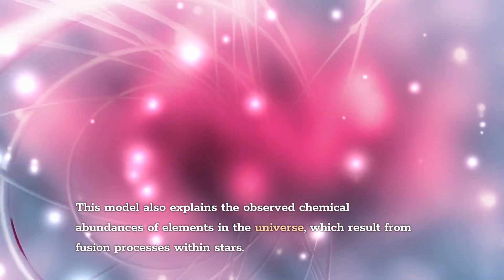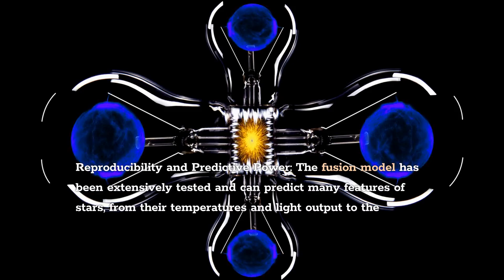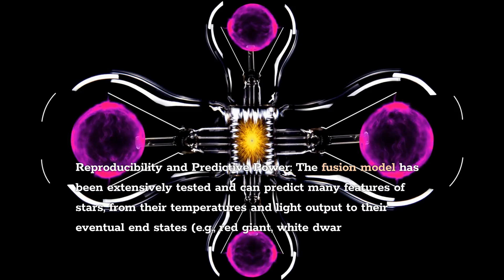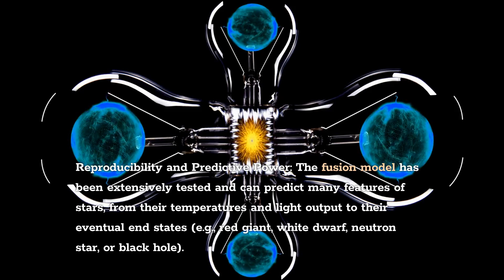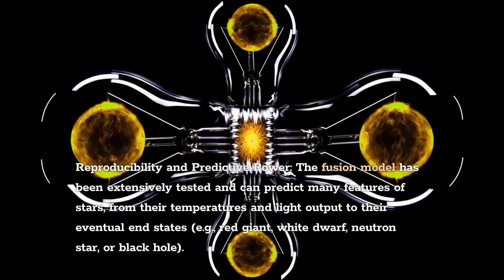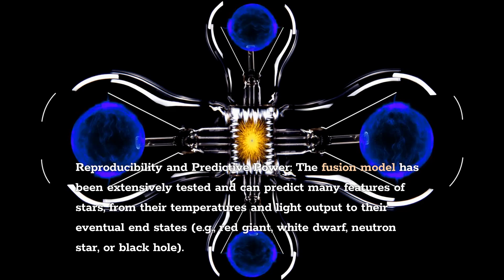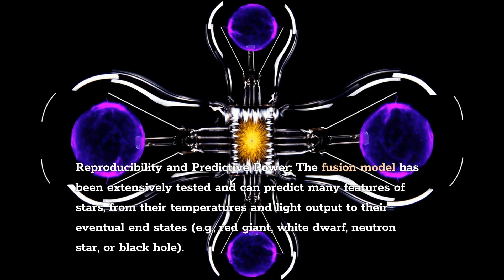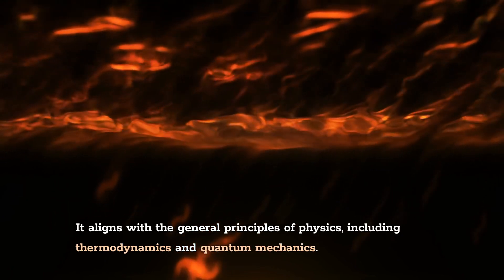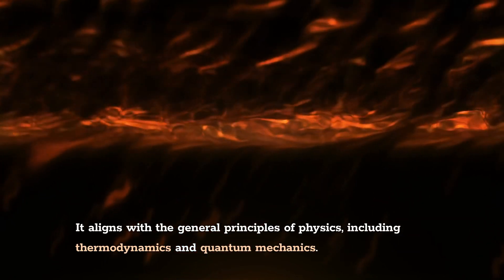The fusion model has been extensively tested and can predict many features of stars — from their temperatures and light output to their eventual end states, such as red giants, white dwarfs, neutron stars, or black holes. It aligns with the general principles of physics, including thermodynamics and quantum mechanics, giving it strong reproducibility and predictive power.